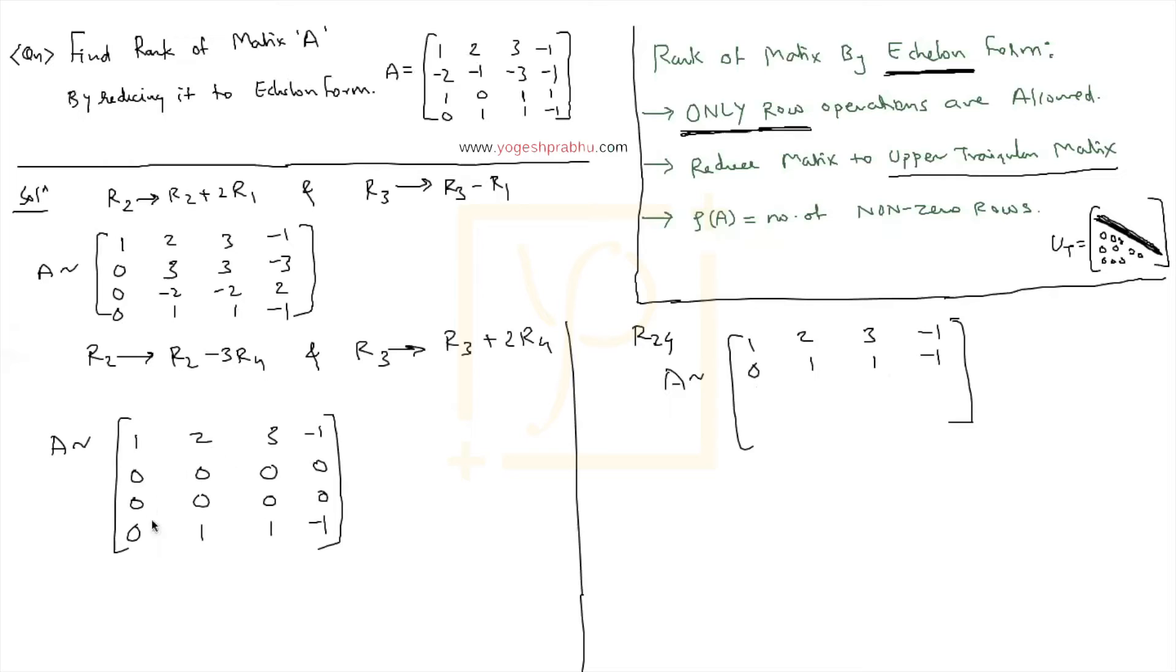And the third row was anyways 0. And when we exchange that, the second row comes here. And all these will be 0. So now that's the reduced form of A.